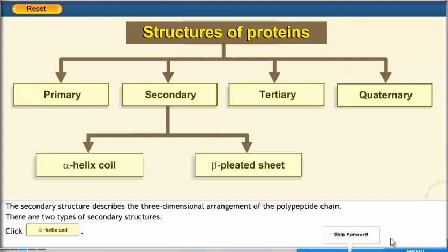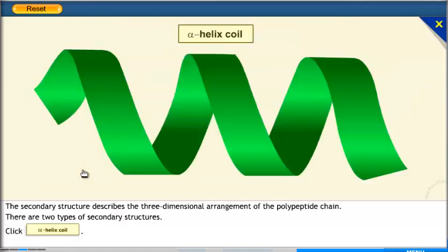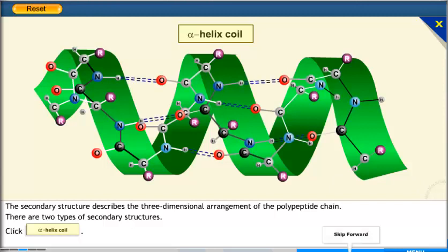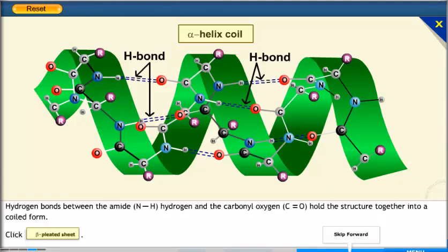The secondary structure describes the three-dimensional arrangement of the polypeptide chain. There are two types of secondary structures. In the alpha helix, hydrogen bonds between the amide hydrogen and the carbonyl oxygen hold the structure together into a coiled form. The beta pleated sheet is another type.